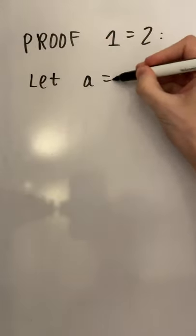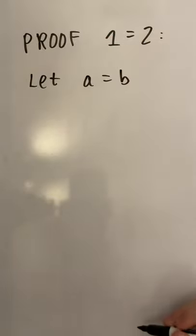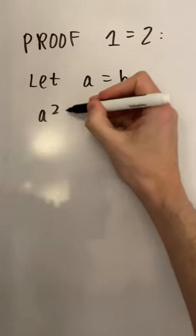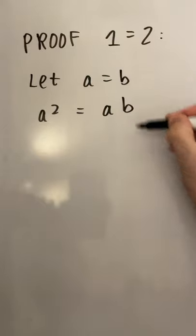We will begin by letting A equal B, and if we multiply both sides by A, we get A squared is equal to AB.